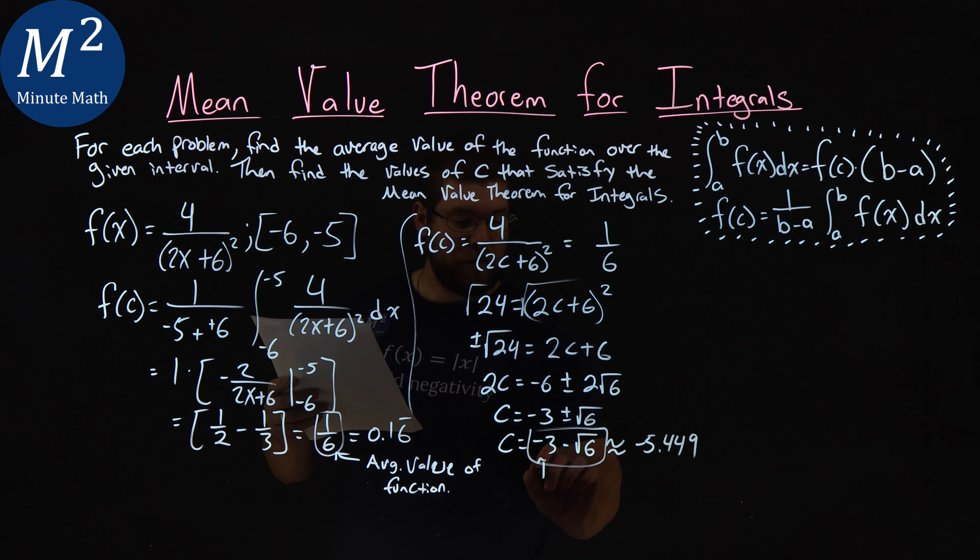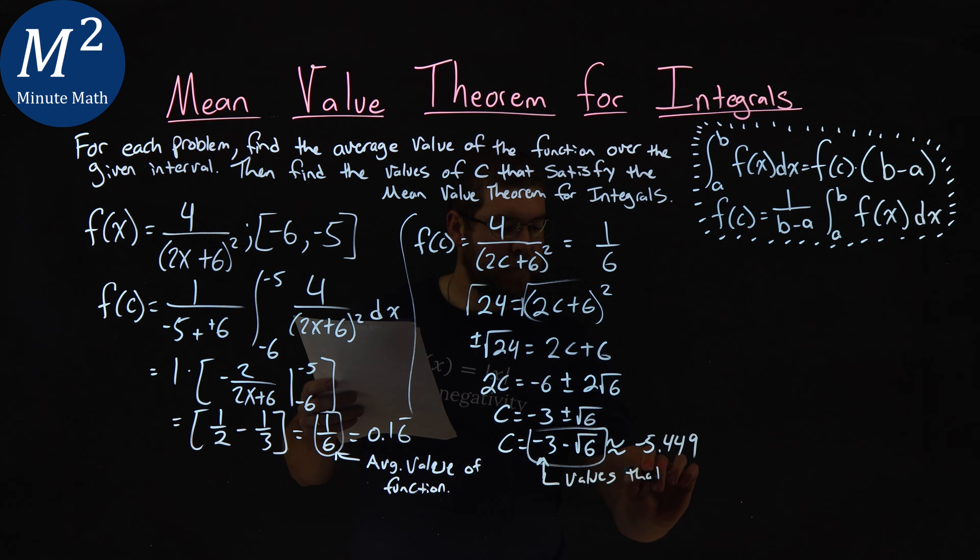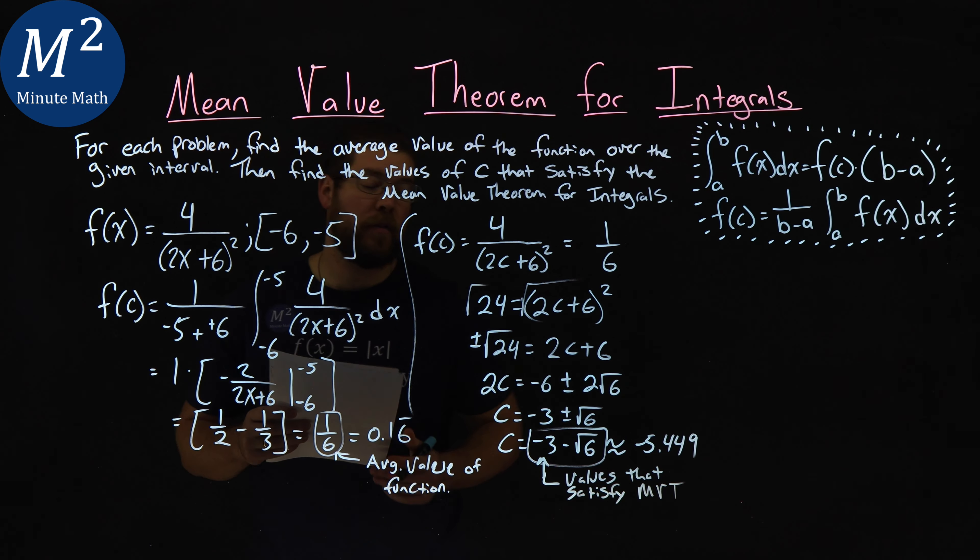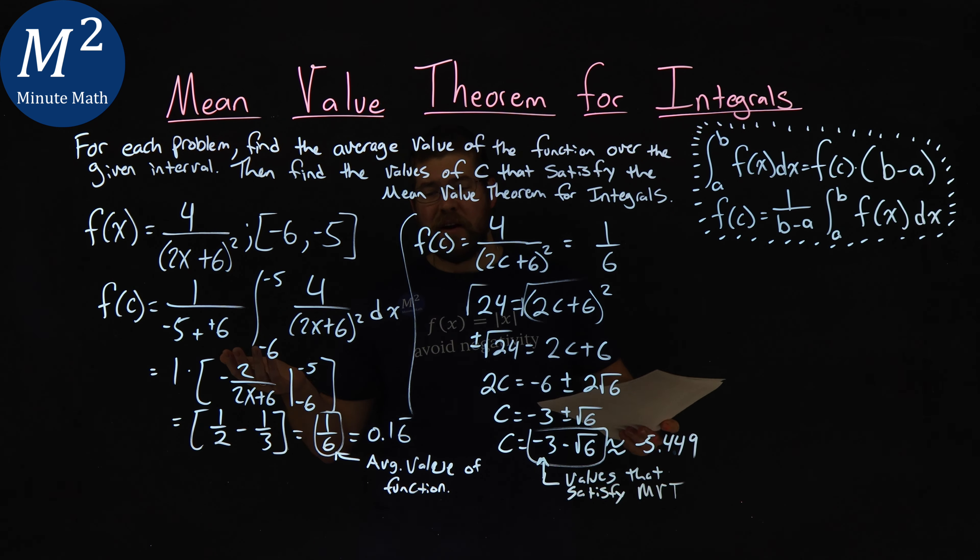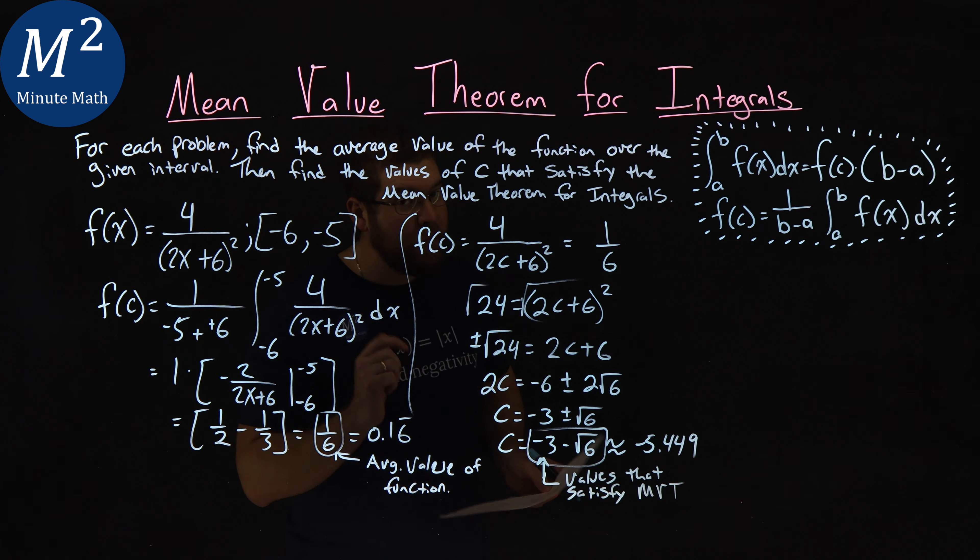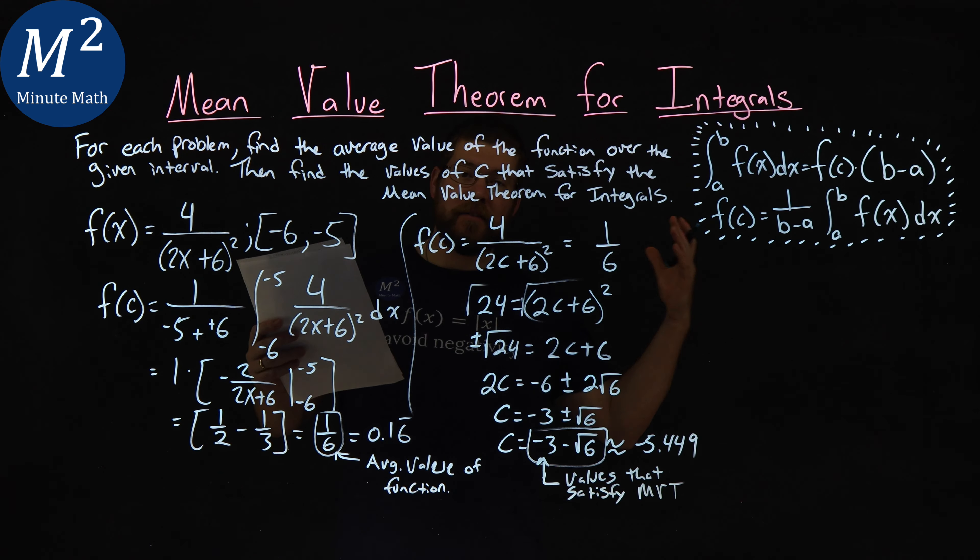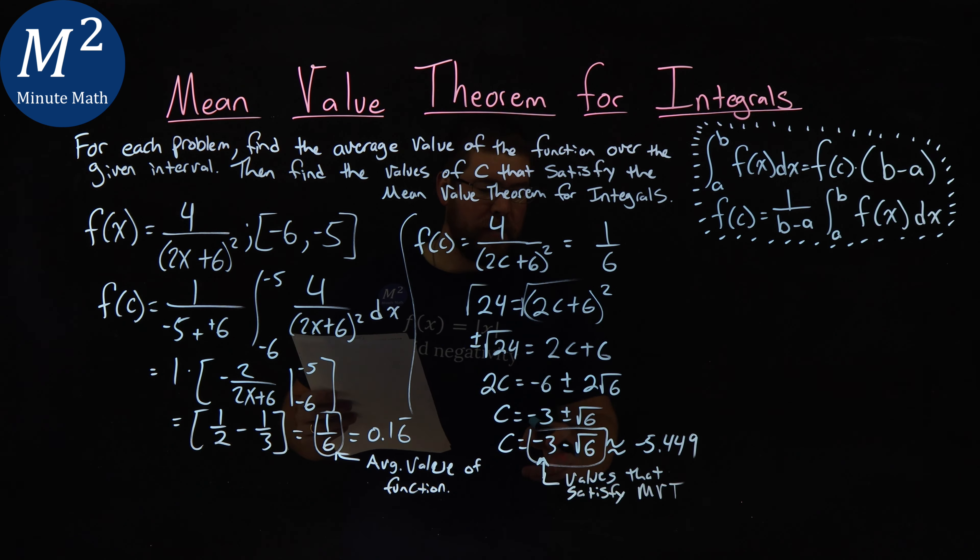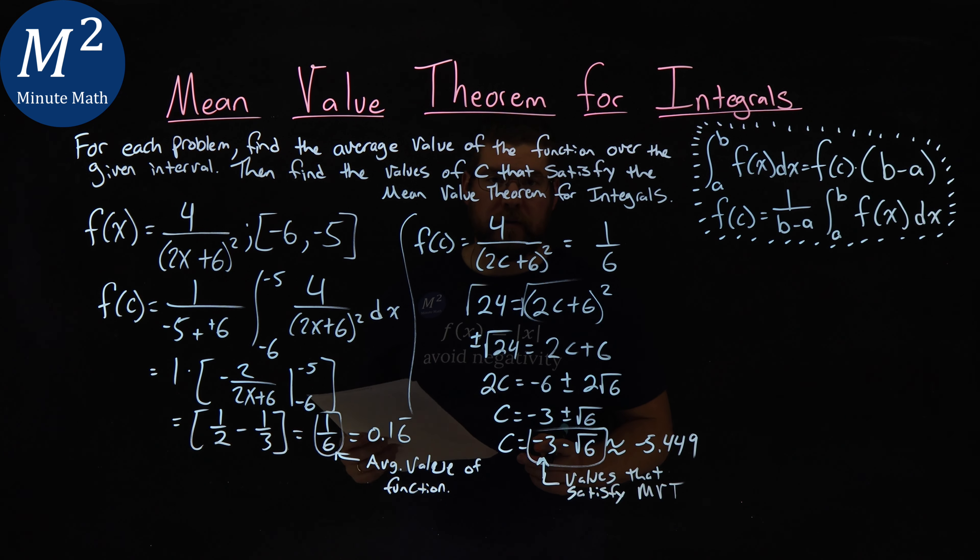But I like to write it in the square root form. And so right here is the value, values that satisfy the MVT, mean value theorem. And so that's our final answer here. 1 sixth is the average value of the function. And the value that satisfies the MVT is negative 3 minus the square root of 6.